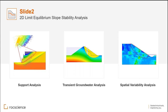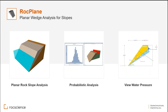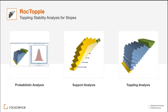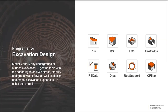A walkthrough of our tools: Slide 2 is the well-known 2D limit equilibrium slope stability analysis, and its companion Slide 3 enables 3D limit equilibrium slope stability analysis. For discontinuity-controlled masses, we have Rock Plane for planar and wedge analysis, S-Wedge for wedge failure analysis, Rock Topple for toppling-type stability analysis, and Rock Fall for statistical rockfall analysis. Note that Rock Fall 3, the 3D version, is announced and approaching release for the engineering community.